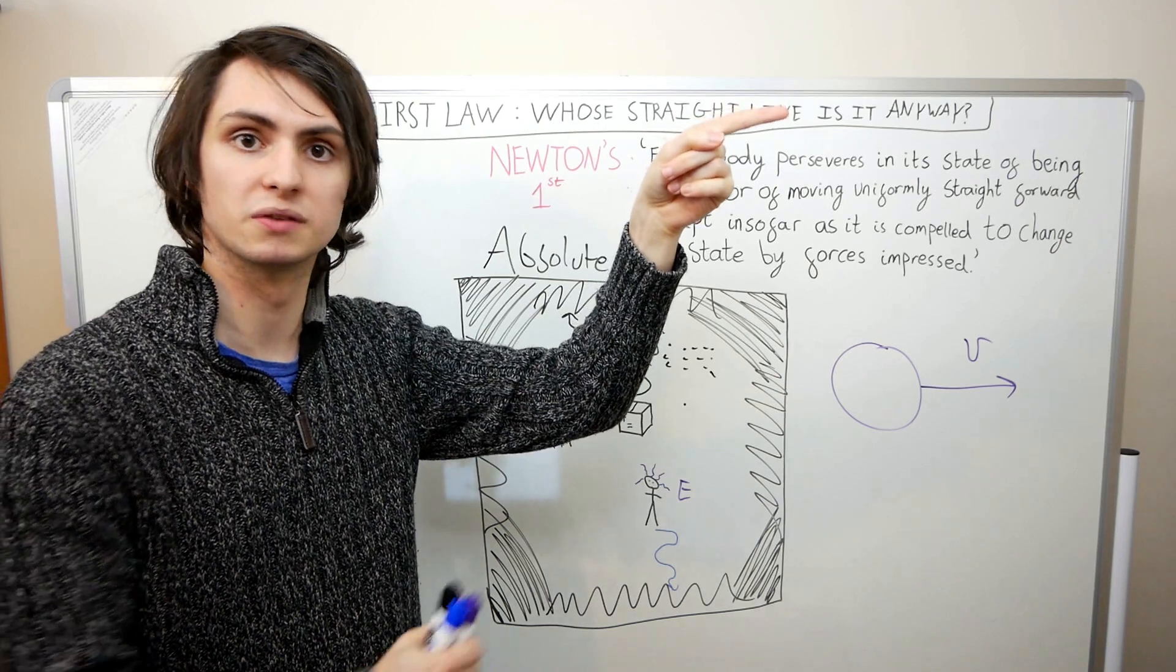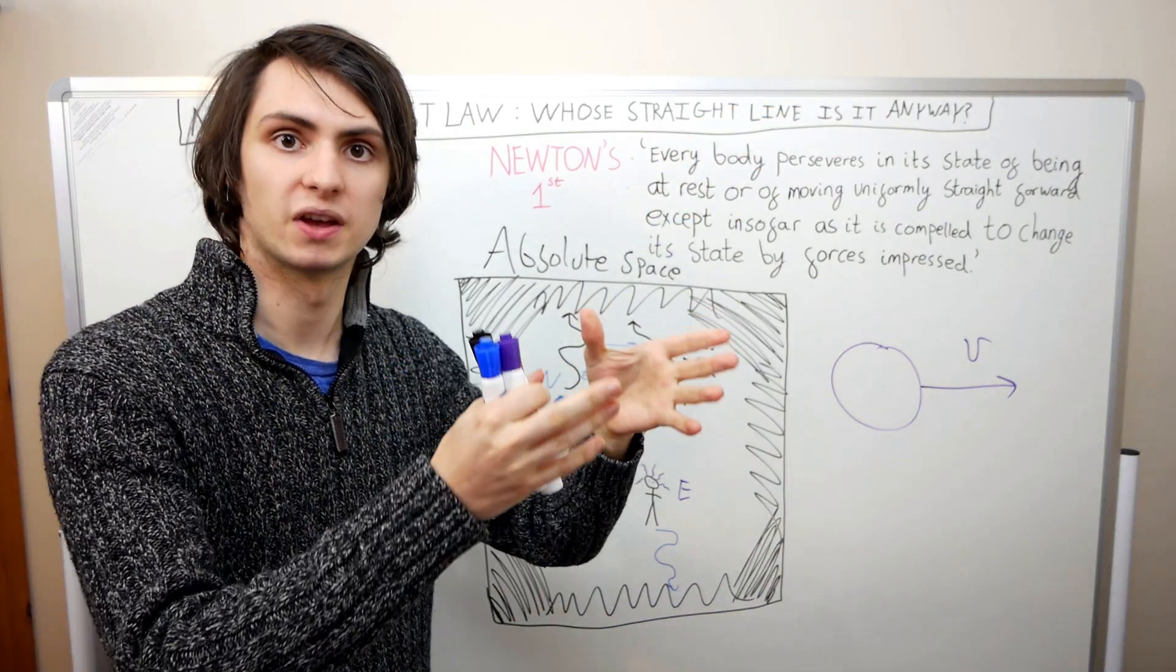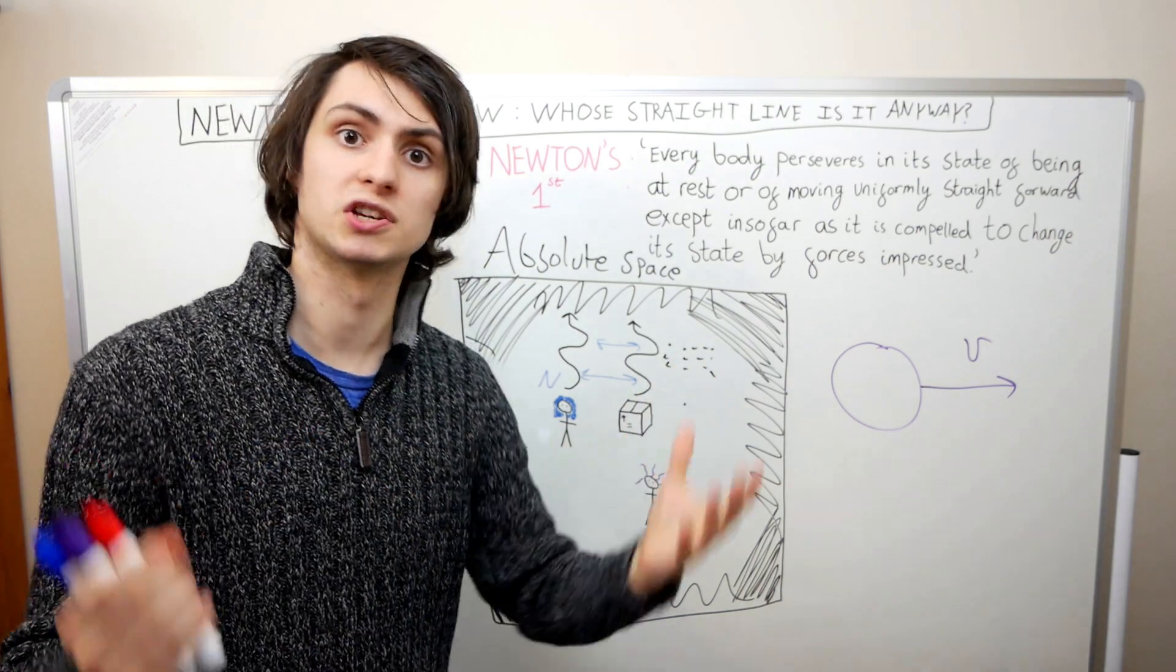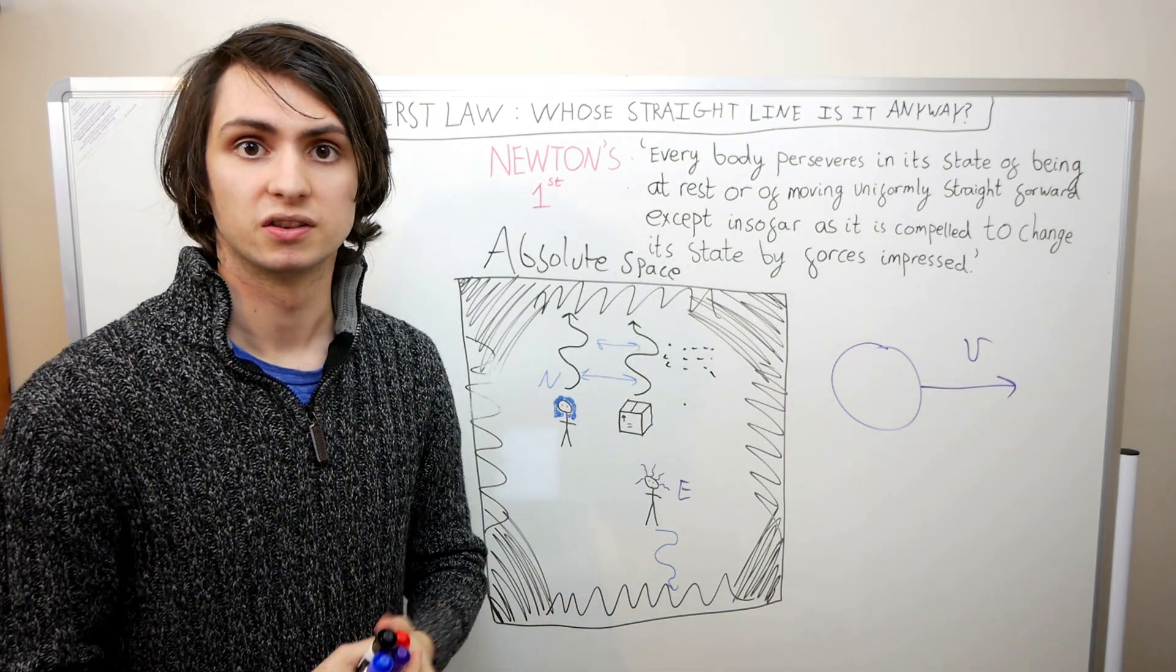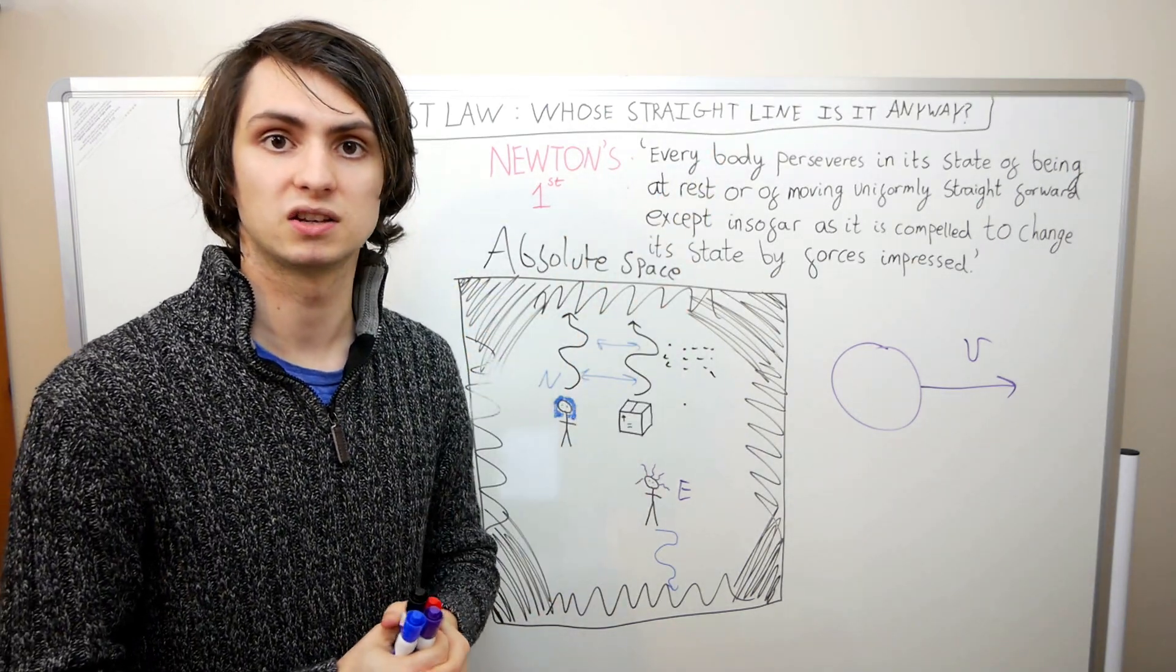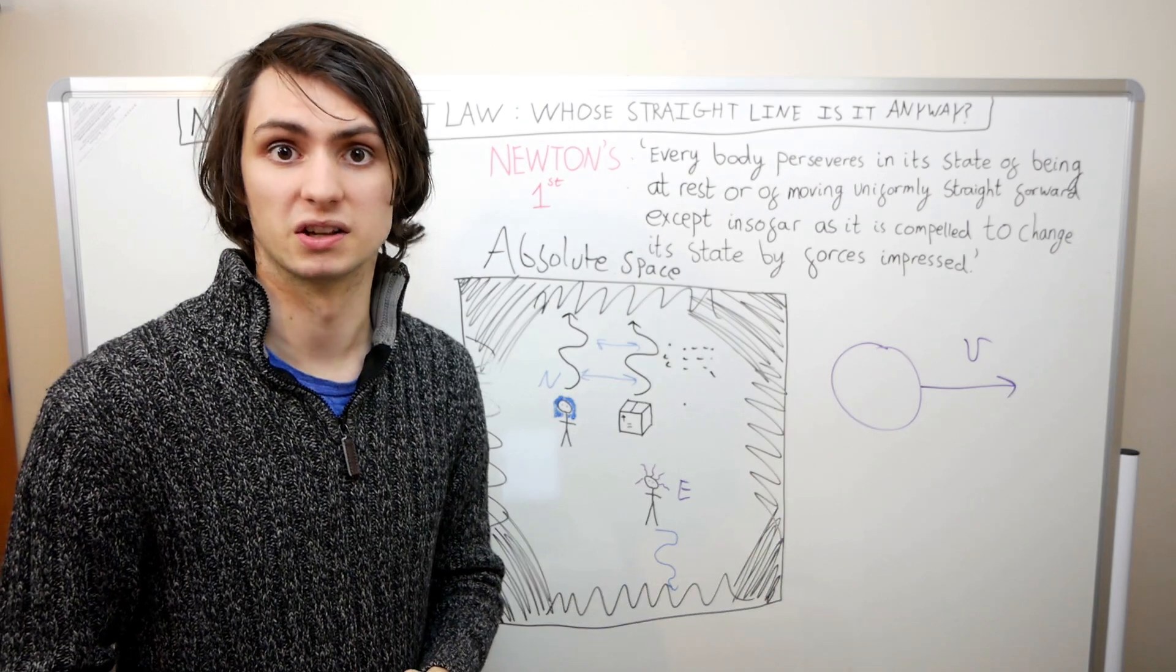Perhaps we could say that the Sun at the centre of our solar system is stationary relative to absolute space. But just like the Earth, the Sun is on the edge of a spiral galaxy and so is zooming through space. So it's unlikely that it is stationary relative to absolute space.